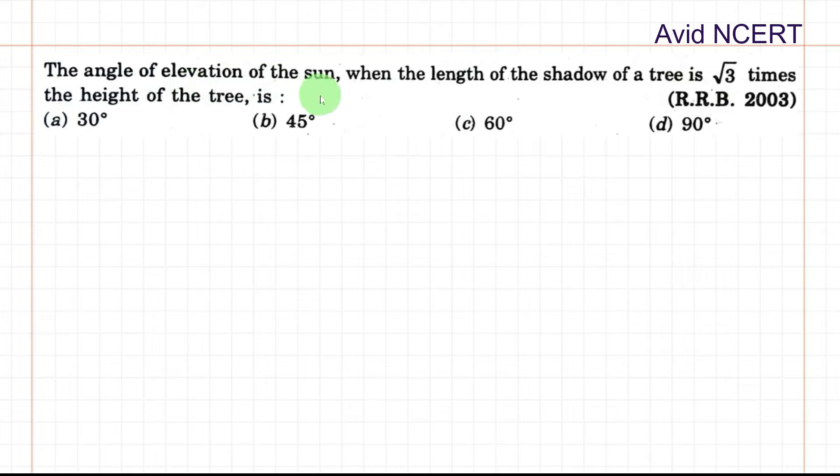The angle of elevation of the sun when the length of the shadow of a tree is √3 times the height of the tree is question mark.